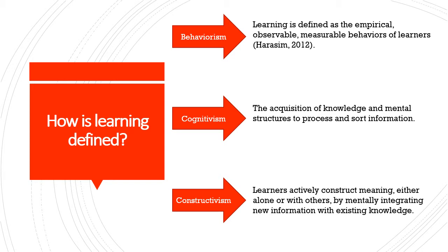Like Cognitivism, Constructivism sees learning as an active mental activity. Unlike Behaviorism and Cognitivism, however, it sees reality and our knowledge of it as relative and individualized. Each of us constructs knowledge that is relative to how we experience the world. Social Constructivists believe that we must negotiate with others to construct knowledge, while other Constructivists believe that knowledge construction is an individual pursuit. Briefly put, we make meaning by doing.